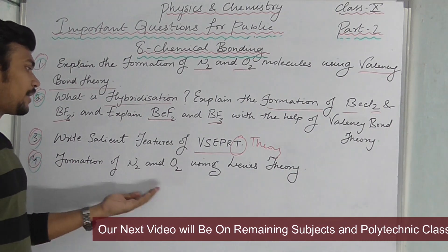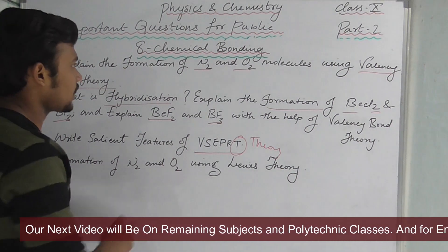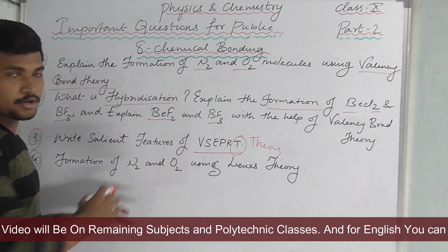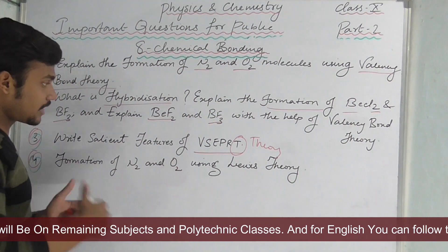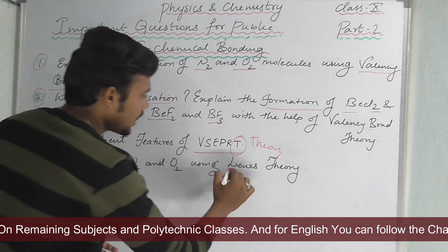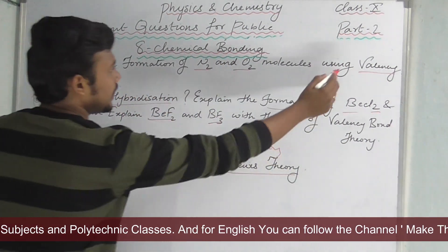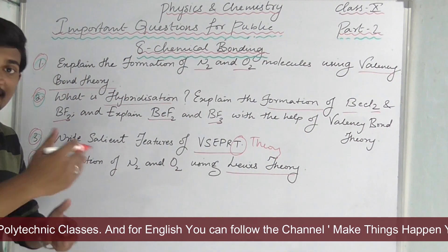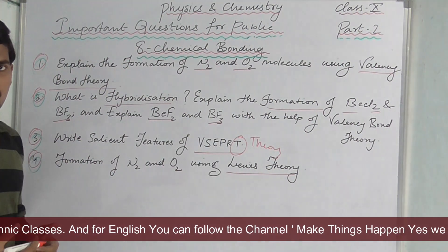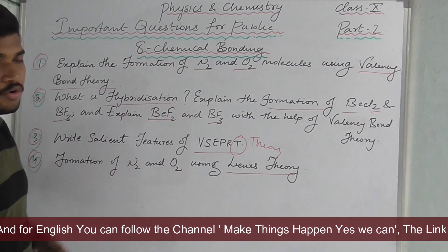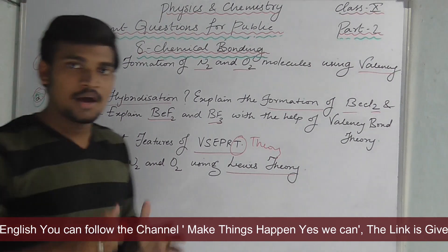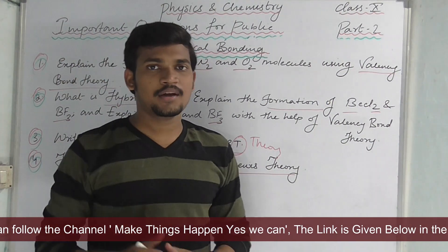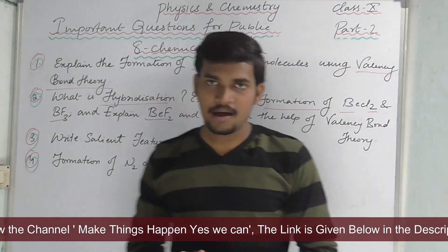Formation of N2 and O2 using Lewis theory — you have to write that. Also, explain the difference between Lewis theory and valency bond theory. These are the main important questions. If you prepare for this, you will get marks.